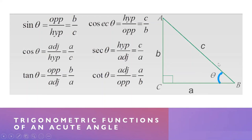Let us find the six trigonometric functions of angle B, so angle B is our theta. Sine is opposite over hypotenuse. The opposite side of theta is side B, and the hypotenuse is C, so sine B equals B over C. The cosine of theta is adjacent over hypotenuse. The adjacent side is A and the hypotenuse is C, so cosine B equals A over C.